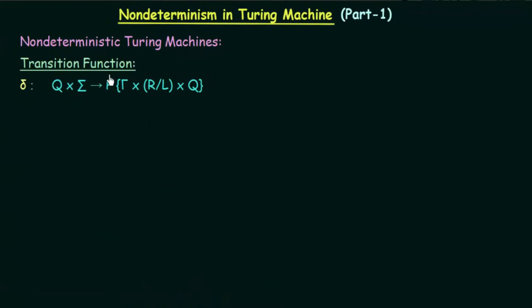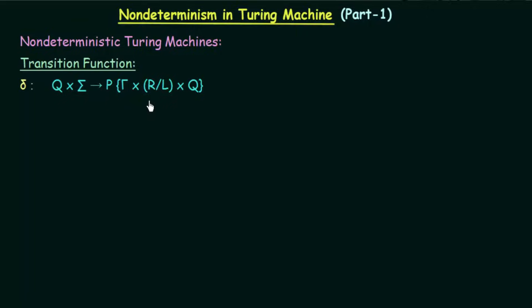Here is the transition function for non-deterministic Turing Machines. The only difference is that there is a P written here — P stands for power set, and the rest is the same. This means that a state on getting a particular input can go not only to one state, but to many states. Instead of one state, we have written the power set of all possible combinations.